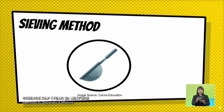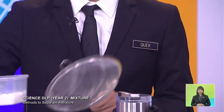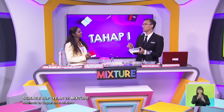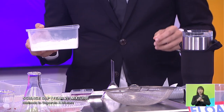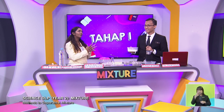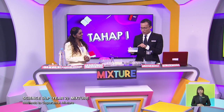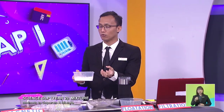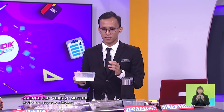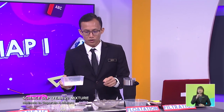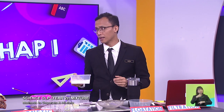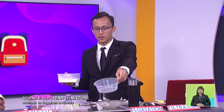The next method that we are going to look into is the sieving method. As you can see, this is a sieve. And in front of us here, I've actually mixed a mixture — this mixture is actually a combination of raisins and also flour. I'm sure this is the method that moms often use at home. Because one of the materials is in powdery form — a powdery solid form — and the other one is a larger size, we cannot use the hand-picking method. So now we're going to try to use this sieving method.